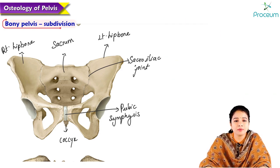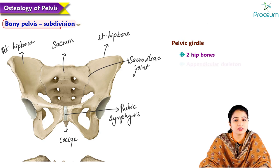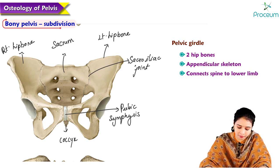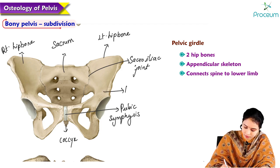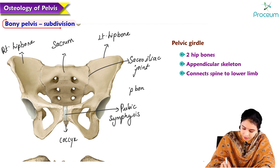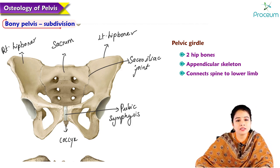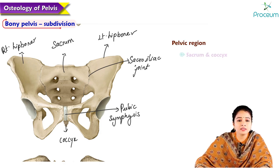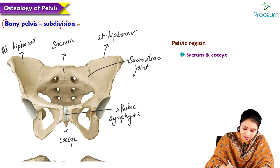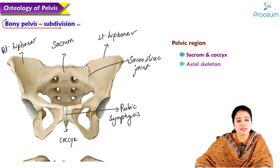The bony pelvis is subdivided into the pelvic girdle, formed by the two hip bones, which is part of the appendicular skeleton connecting the spine to the lower limb. The sacrum and coccyx form the axial skeleton, representing the pelvic region of the spine.